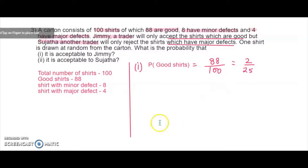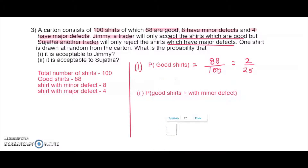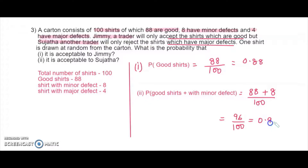For the second person, Sujata, she is rejecting only the shirts with major defects. So she will take good shirts plus shirts with minor defects — both — because she thinks she can make small changes and sell them. Good shirts are 88 and minor defect shirts are 8, divided by total 100, which is 96 over 100. That gives 0.96.